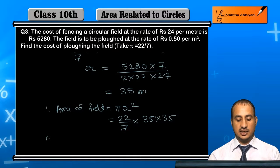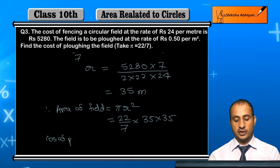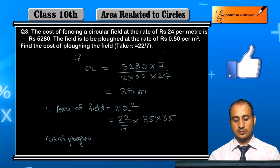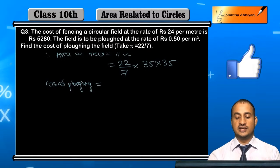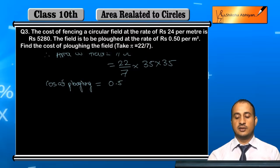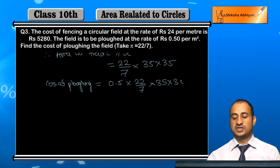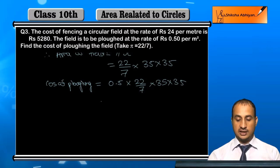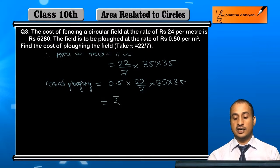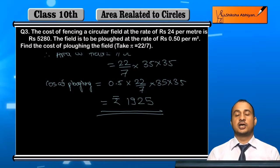Now the cost of plowing = Rs 0.5 multiplied by the area of the field. When you completely solve this, the cost of plowing comes out to be Rs 1,925.